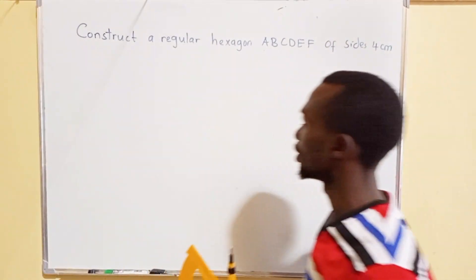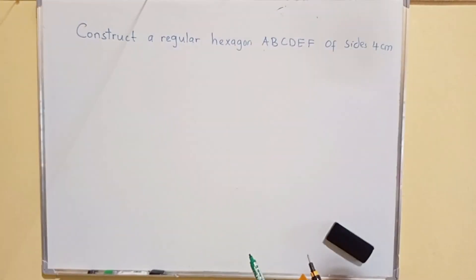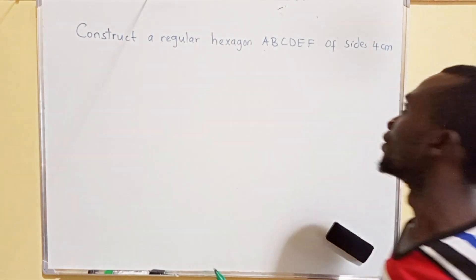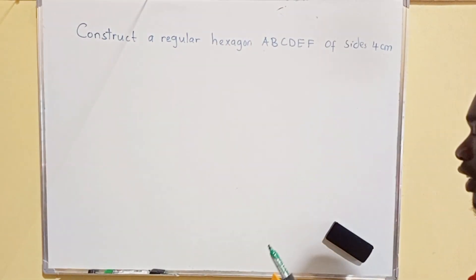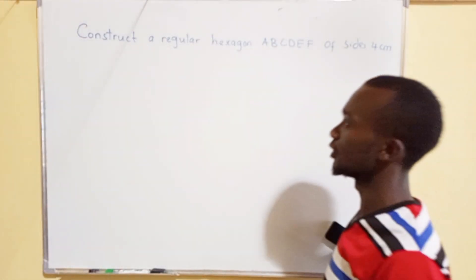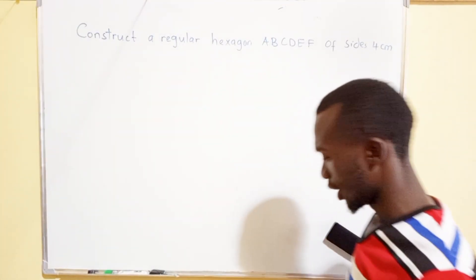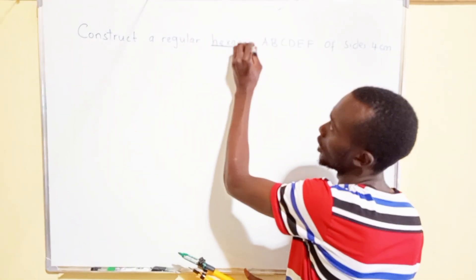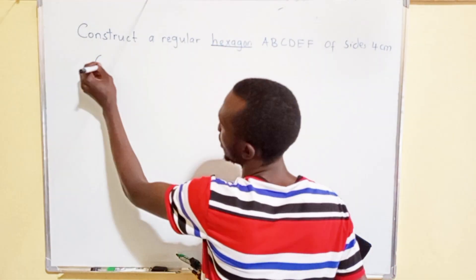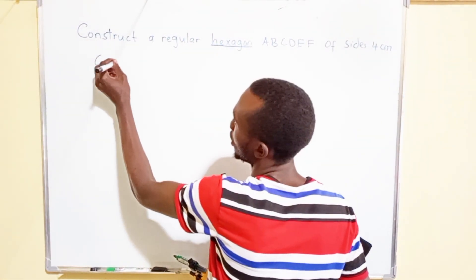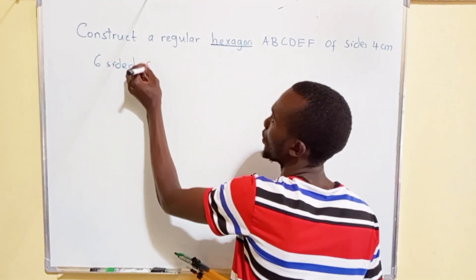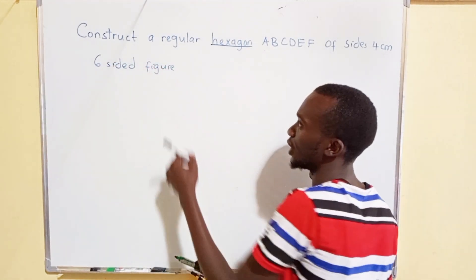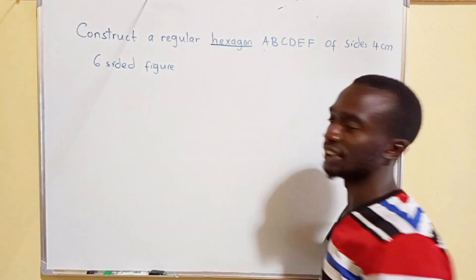The question is: construct a regular hexagon ABCDEF of size 4 cm. Now, a hexagon is a six-sided figure. A six-sided figure is known as a hexagon.